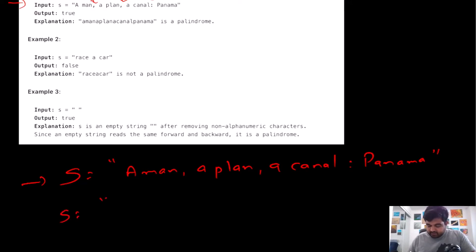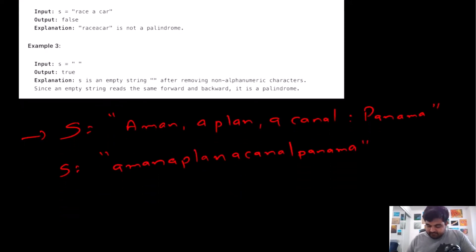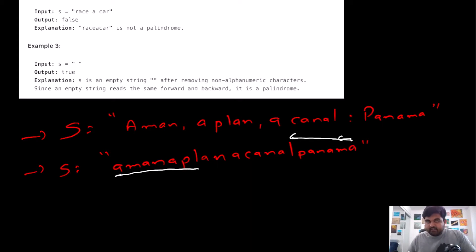For this cleaned string, if we start going from the front and from the back, we see that all the characters from the front are also present from the back in the same order. That is why we can determine this string is actually a palindrome and we return true.